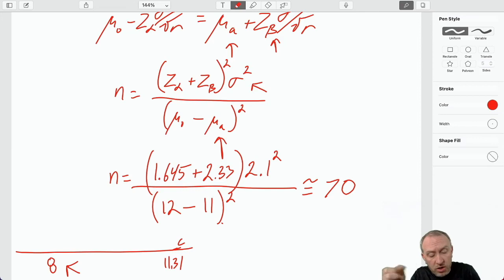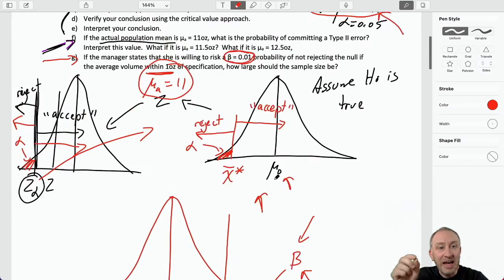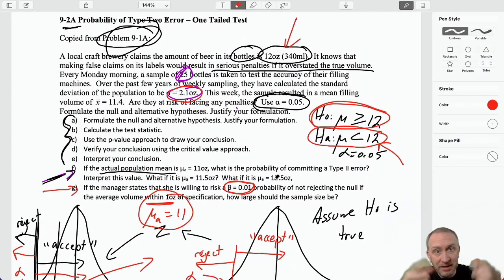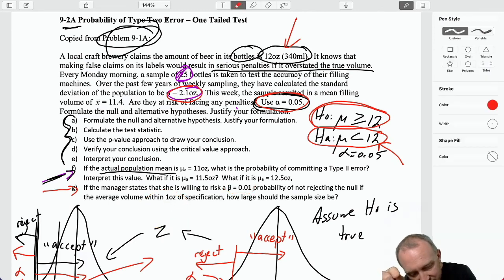And that's it. So, with that formula, now I can say, okay, if I have a sample size of 70 observations, that allows me to now perform this test at the 5% level of significance. So, there's my exposure to a type 1 error. And with a sample size of 70, I know that I risk only a 1% chance of committing a type 2 error if the average volume is within 1 ounce.